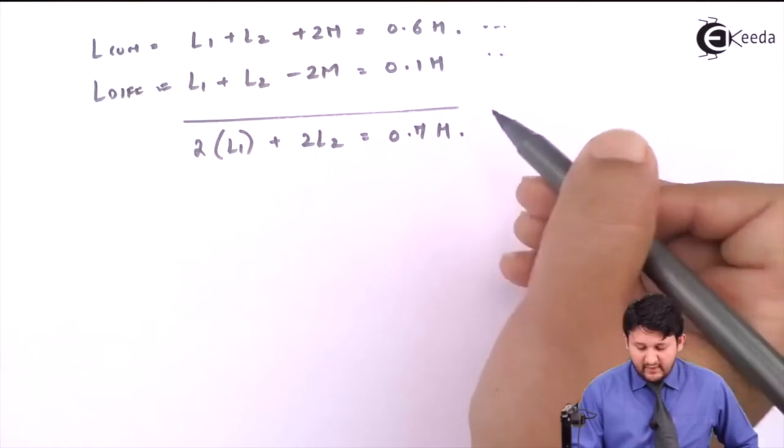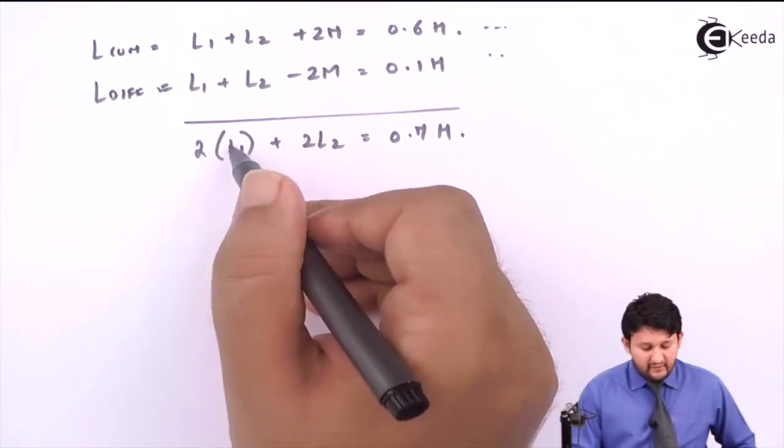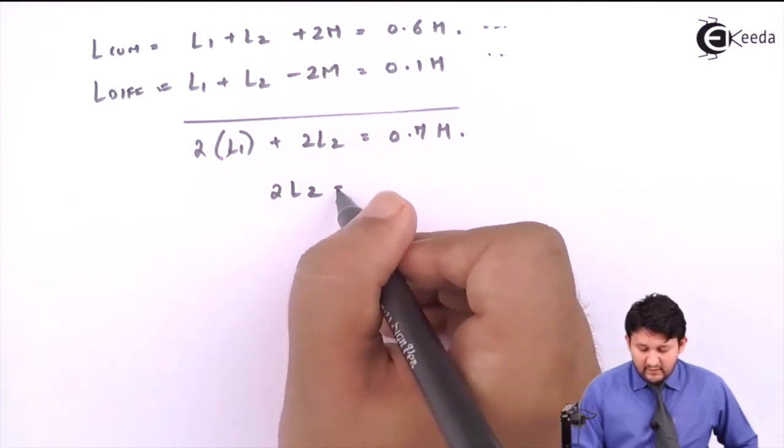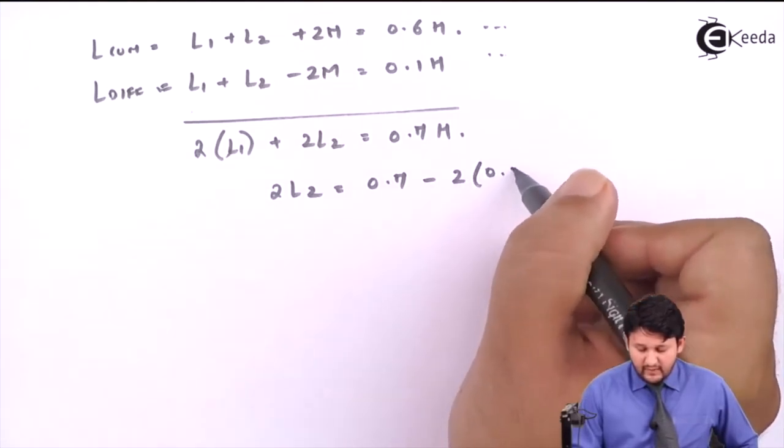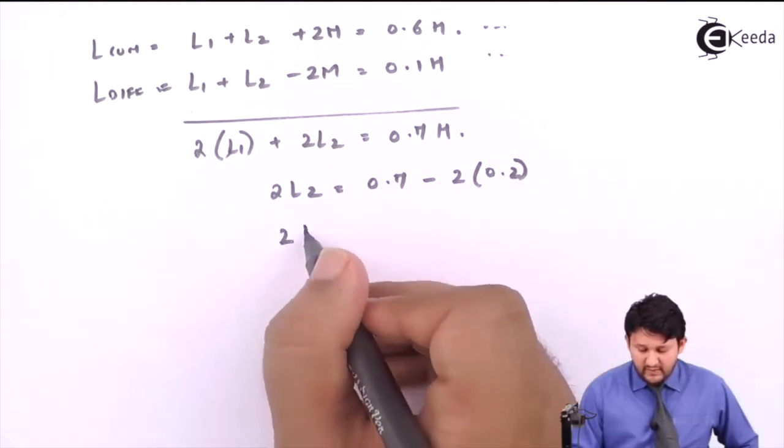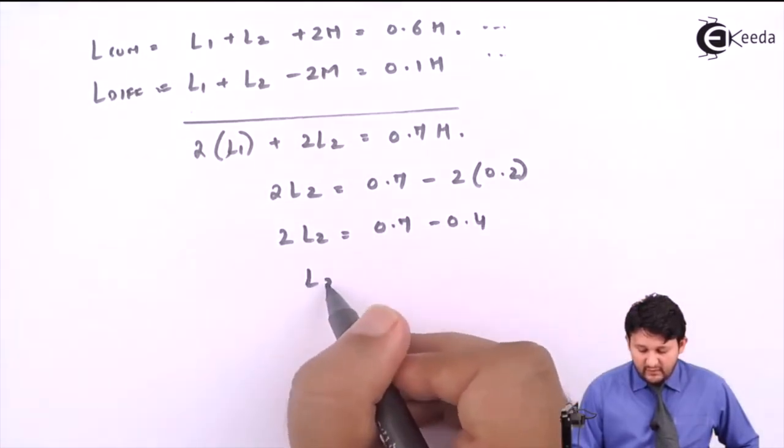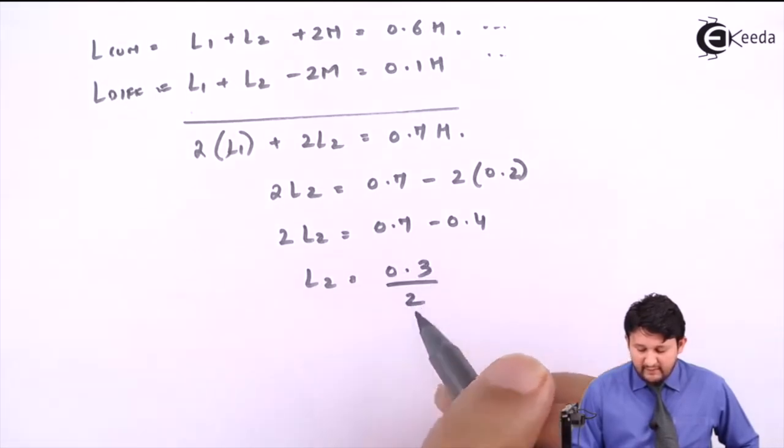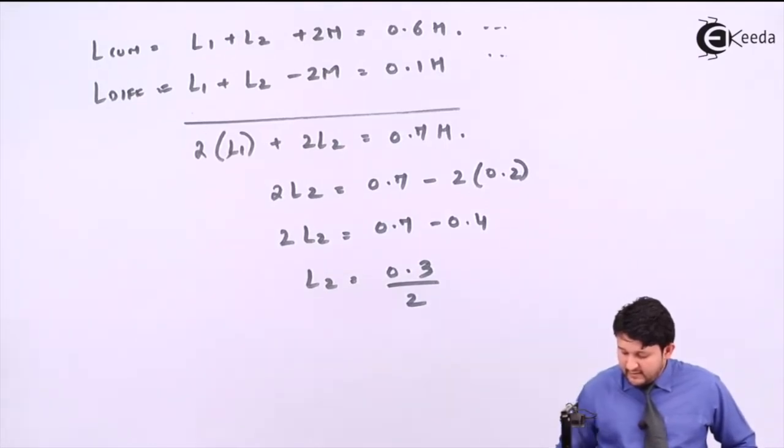What I get is twice of L1 twice of L2, this will be 0.7H. Since I already know the value for L1 which I have got as 0.2, so this will be twice L2 equals 0.7 minus 2 into 0.2. So the value will be 2L2 equals 0.7 minus 0.4.